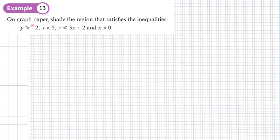Example 13: on graph paper, shade the region that satisfies the inequalities y ≥ -2, x < 5, y ≤ 3x + 2, and x > 0. When we have lots of inequalities, it's often more useful to shade the area that you don't want, leaving a gap in the middle which is the area you do want. Shading what you want can end up with a real mess in the middle.